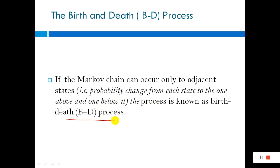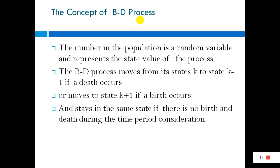The Markov chain applied on the birth and death process tells that the state depends on just the previous or current one. If the Markov chain can only move to adjacent states — that is, the probability changes from each state to the one above and below it — that is called the birth and death (BD) process. The number in the population is a random variable and represents the state of the process.